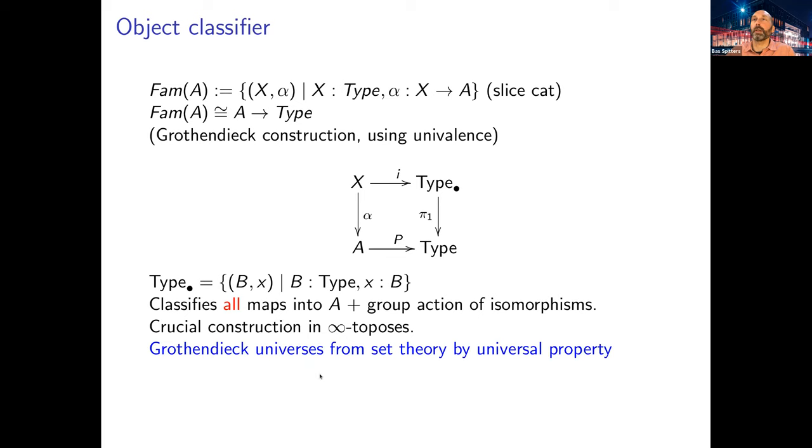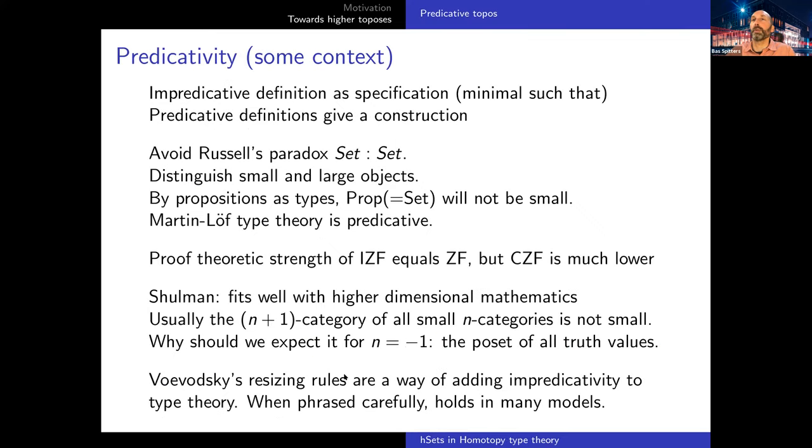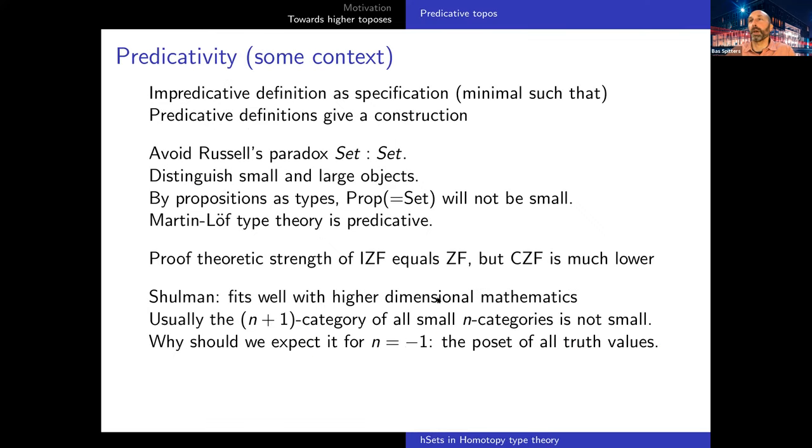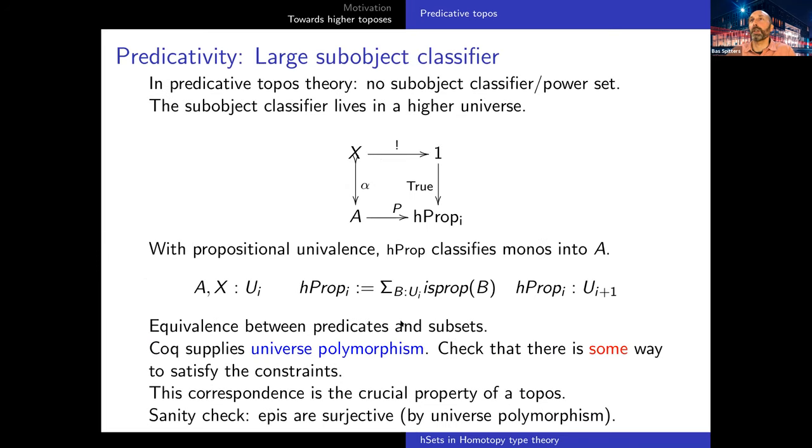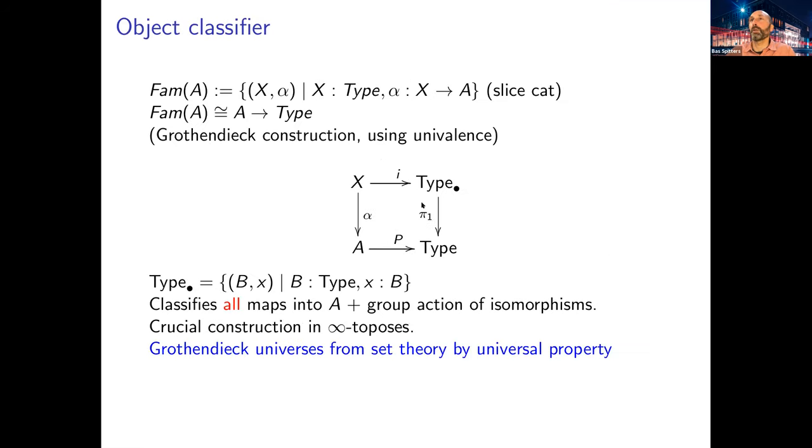The pointed types are types combined with a point in it. So the universe now not only classifies the monomorphisms or the subsets, but it classifies all the maps, plus the groupoid action of isomorphisms or equivalences. And this existence of the object classifier, or actually of enough object classifiers, of enough universes, is a crucial construction in infinity topos. The object classifier is a well-known construction in higher topos theory, but it's usually not phrased in terms of univalence. Like I said, we had this nice blog post by Mike Shulman where he showed that impredicativity is sort of an accident that just happens on a very low dimension. The same thing shows up here that for the H-propositions, this happens to be the unit type which is small, but here the pointed types will be big.